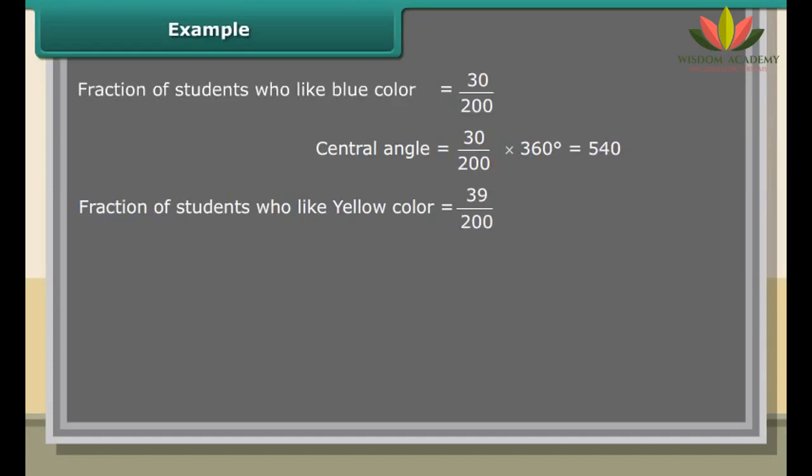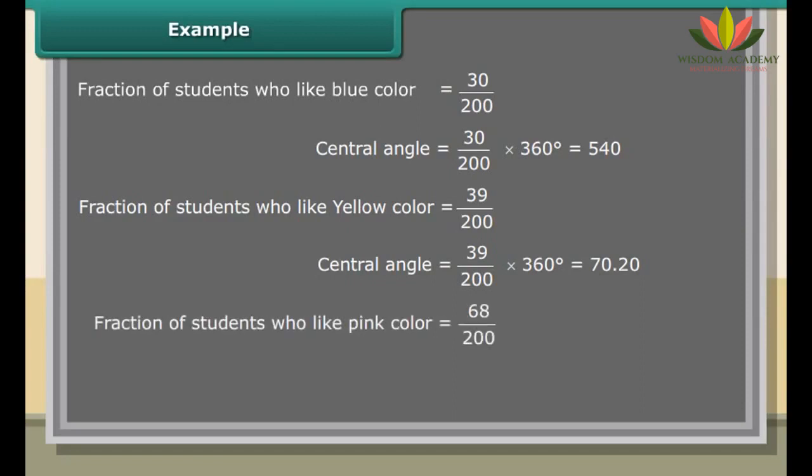Example: The favorite colors of students in a school is given in the following table. Before representing it in a circle graph, we have to do the following steps: Find the whole parts, count the number of groups, find what fraction of each group has as a whole, and find the central angle and draw the graph according to it.